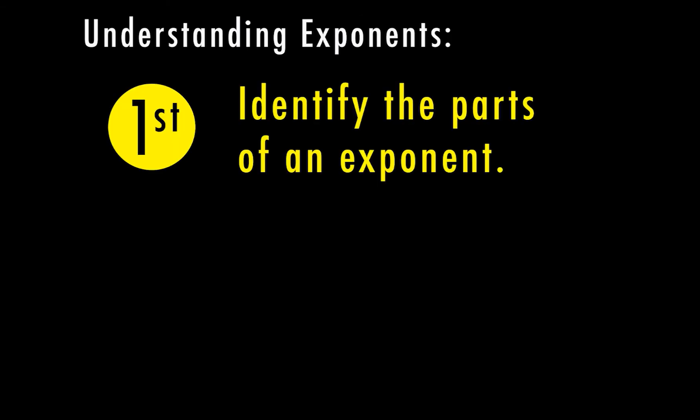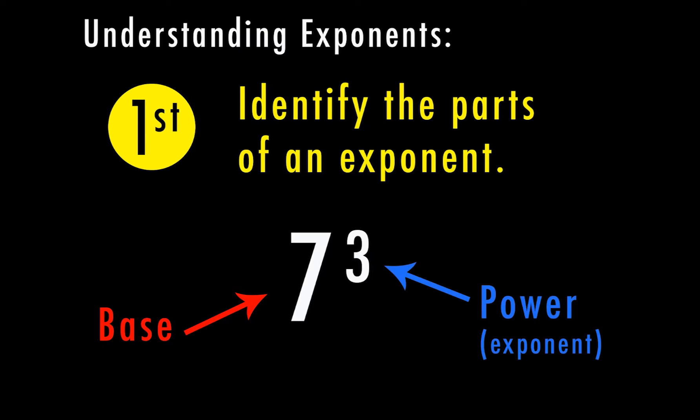So in order to understand exponents, the first thing we need to do is identify the parts of an exponent. So here we have the number 7 to the third power. The base is going to be my 7, or in this case my whole number, my big number. And then my power is my exponent.